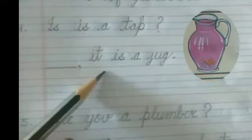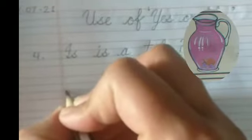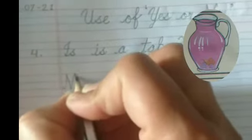You will write here: No, it is a jug. Then put the full stop. First letter should be capital letter, then put the full stop. Understood?